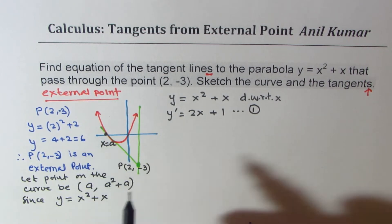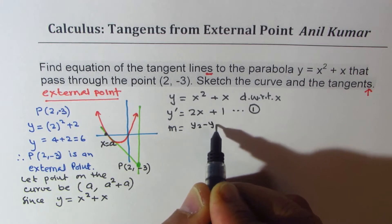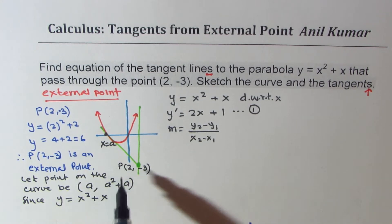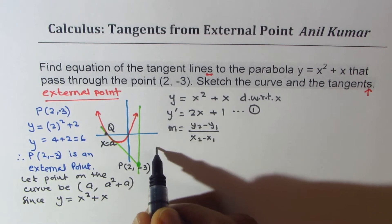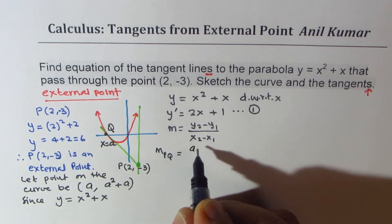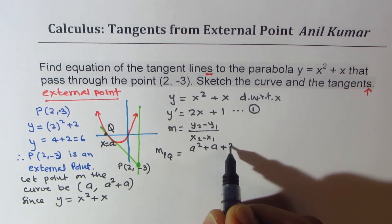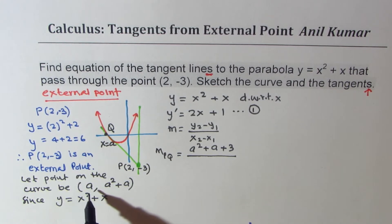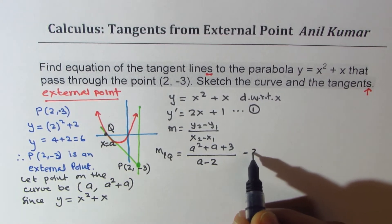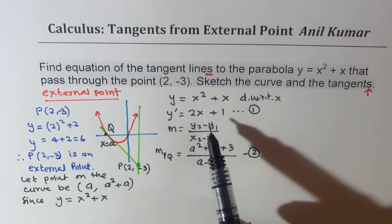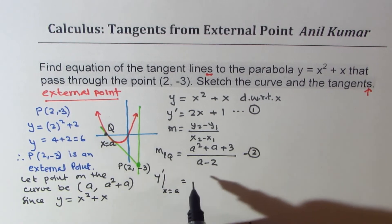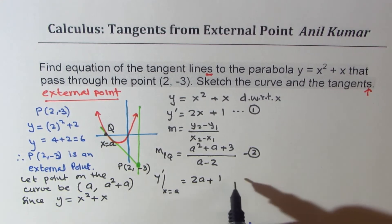We can also find the slope using the slope formula: (y₂ − y₁)/(x₂ − x₁). We have two points — point P at (a, a² + a) on the curve and point Q at (2, -3). So the slope between P and Q is (a² + a − (−3))/(a − 2), which is (a² + a + 3)/(a − 2). We call this Equation 2. From Equation 1 at x equals a, the slope is 2a + 1 — call this Equation 3.